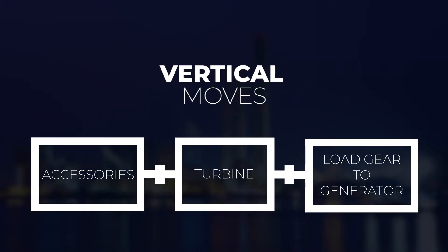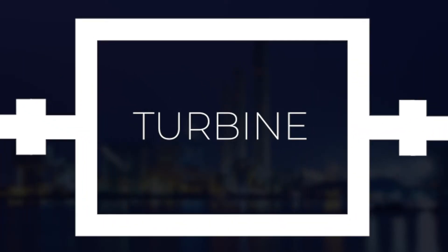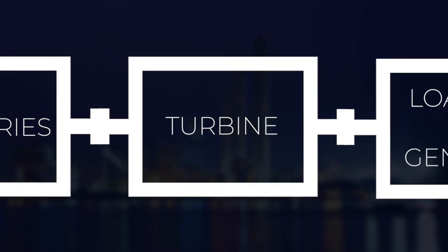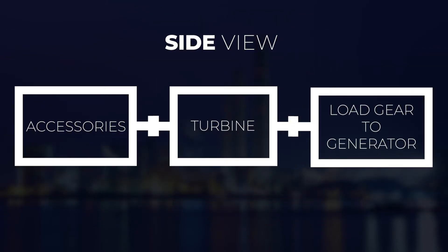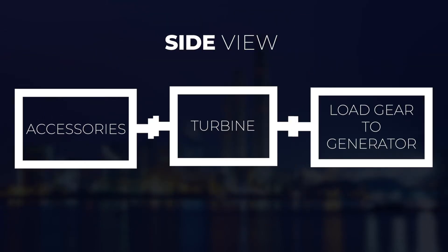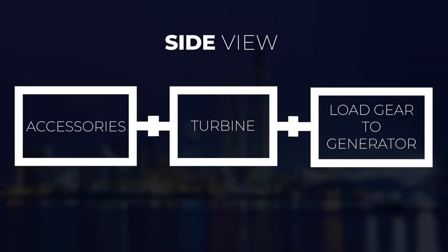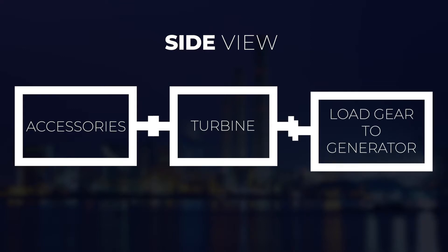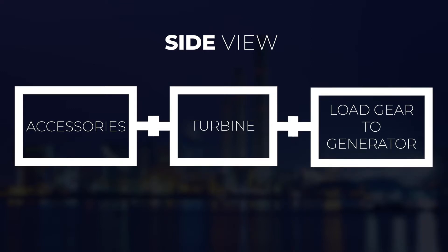We want to move as little as possible. Generally, for this type of alignment, the turbine is going to be our fixed machine. Nine times out of ten, we will move the accessory skid to the turbine, and then move the load gear to generator skid to the turbine.